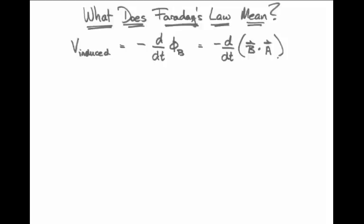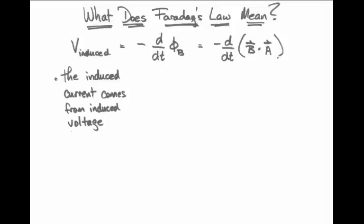I would like to talk about how exactly to know which direction the current induced by Faraday's law of induction will turn in a circuit. We have this equation that says the induced voltage in a circuit is the negative of the change in flux. That's a little hard to interpret in terms of anticipating which direction the current will go. We could use this equation along with Ohm's law — voltage equals current times resistance — to get the magnitude of the current.